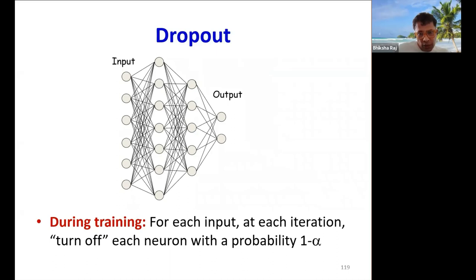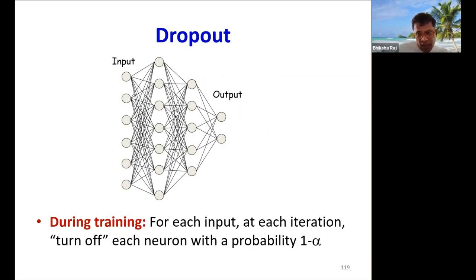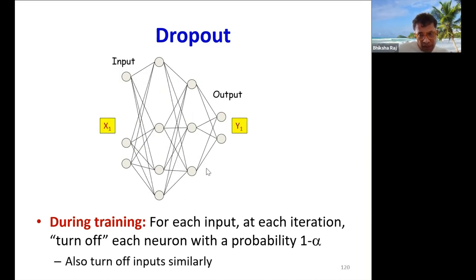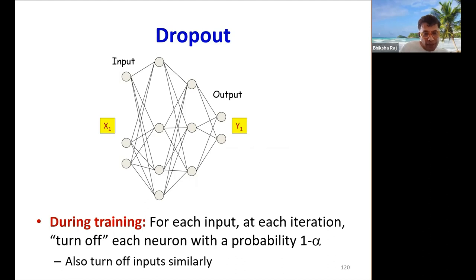Returning to our problem: dropout is a training method where in each iteration, for each input, we randomly turn off or drop out some of the neurons in the network with probability 1 minus alpha — equivalently, retaining neurons with probability alpha. Starting with the full network, as soon as we receive an input, we flip a virtual coin with probability alpha for each neuron. If the coin turns up tails, we switch off the neuron, effectively taking it out of the computation. Practically, this is implemented with a Bernoulli random number generator with success probability alpha.